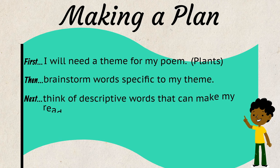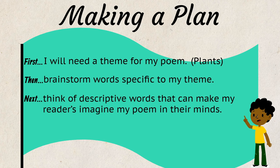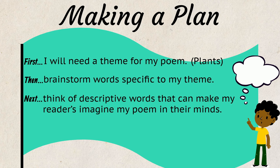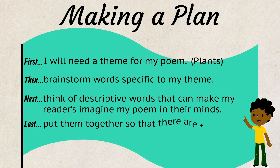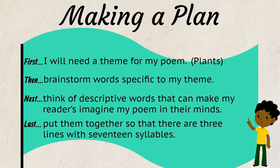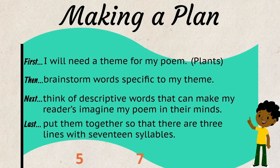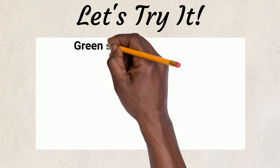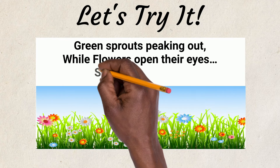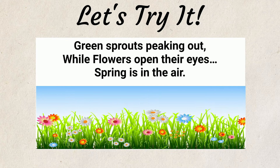Next, I need to think of descriptive words that can make my readers imagine my poem in their minds. Last, I will need to put them together so that there are three lines with 17 syllables — five, seven, five. Let's try it. 'Green sprouts peeking out, while flowers open their eyes. Spring is in the air.'